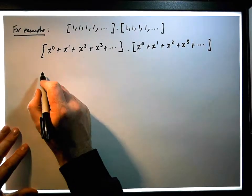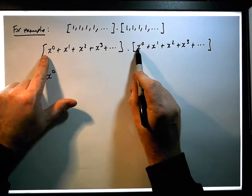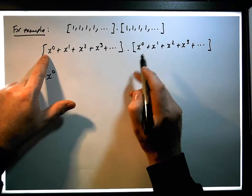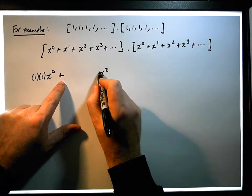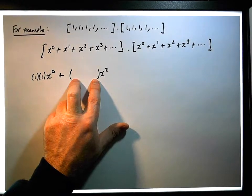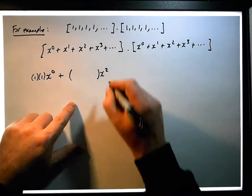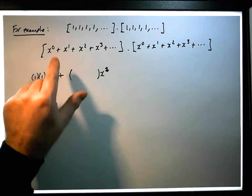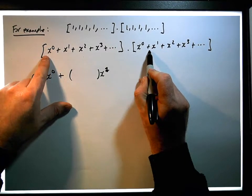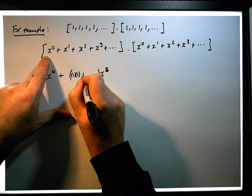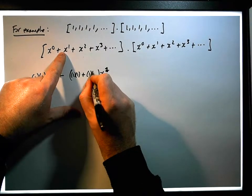When we multiply the terms, we end up with the product. The coefficient of the x to the 0 term is the product of the two coefficients, so it's going to be 1 times 1. For the x to the 1 term, the indices must add to give us 1, so we're going to have the coefficient of x^0 times the coefficient of x^1, which is 1 times 1, plus the coefficient of x^1 times the coefficient of x^0, which is also 1 times 1.